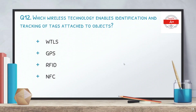Question 12: Which wireless technology enables identification and tracking of tags attached to objects? The options are: WTLS, GPS, RFID, or NFC. The correct option is RFID — radio frequency identification — which is used for identification and tracking tags.